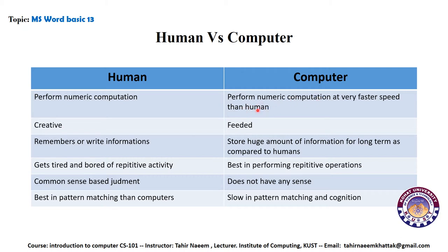For example, if we have to add a hundred or a thousand numbers, the computer will do it instantly after we enter the data, while a human given the same task will take a lot of time. The second characteristic of humans is that they are creative.